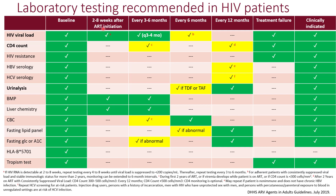Two to eight weeks after ART is initiated, it's important to check the HIV viral load. If the viral load is undetectable at 2 to 8 weeks, you can then monitor every 3 to 4 months. However, if the viral load is not yet undetectable, continue monitoring more frequently — every 4 to 8 weeks — until it is undetectable or at least below 200 copies per mL, then switch to every 3 to 6 months. For patients with good adherence and a suppressed viral load, monitoring can be extended to every 6 months.